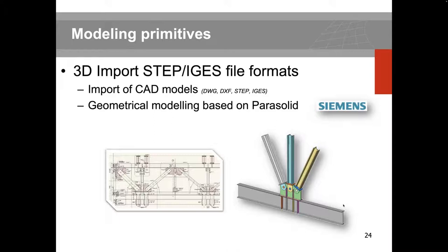In terms of geometry modeling, there are many options: importing CAD files, defining primitive shapes, move/rotate/scale operations, Boolean operations, advanced selection filters, automatic clash detection, body-to-sheet conversion, imprinting points and lines on faces, extruding shapes, and extracting sub-shapes. There are many, many options available.